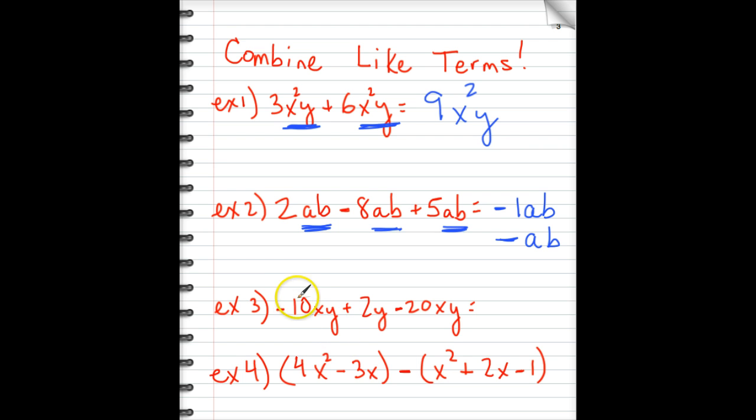Next, we have negative 10xy plus 2y minus 20xy. Notice all three terms are not alike here. xy matches with this xy. This positive 2y is a different term.